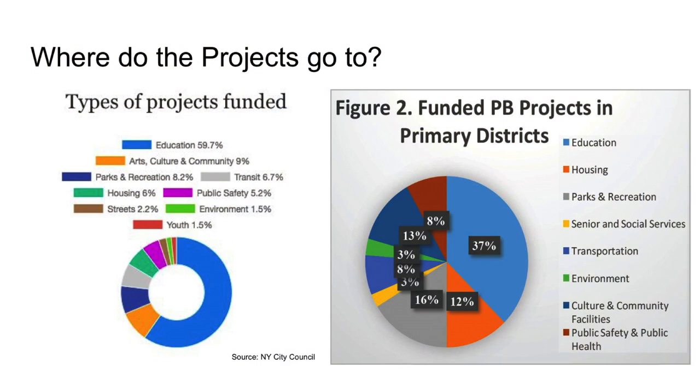Though beginning in Brazil in 1989, participatory budgeting now occurs in 21 U.S. cities, of which New York City is the largest. During this internship, I began collecting data on New York City Council members and participatory budgeting, which allowed me to observe that the majority of projects were going towards schools. In the last cycle, nearly 60% of total projects went towards schools. In the four primary districts that started PB in 2011, 37% of projects have gone towards education.